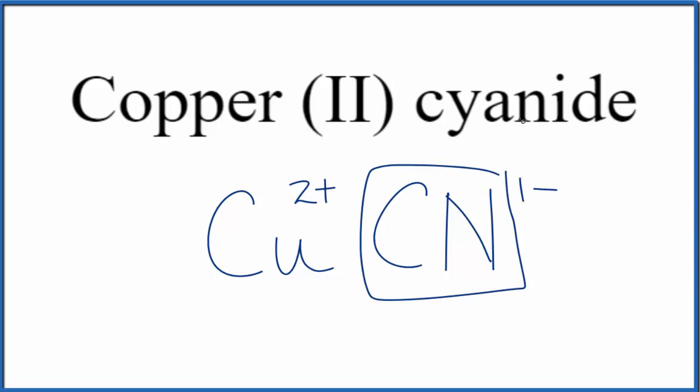So because we have a metal and then this group of nonmetals, it's ionic. We need to balance the charge.